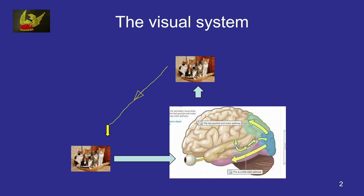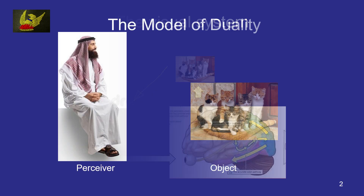This is a very short view of the visual system. This model is the model of duality, with a perceiver who is looking at an object which is the perceived. What we saw from the last slide is that those kittens are in his brain and he projects them out. So in one sense the perceiver and the perceived object are the same, but we always think of it as two things: perceiver and perceived.